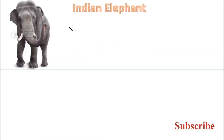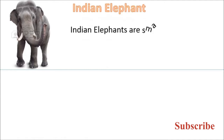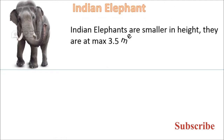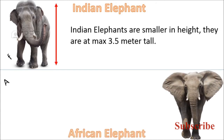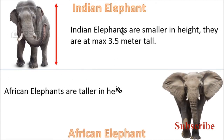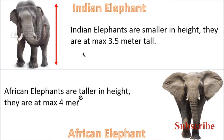Indian elephants are smaller in height — they are at a maximum of 3.5 meters tall. African elephants are taller in height — they are at a maximum of 4 meters tall.